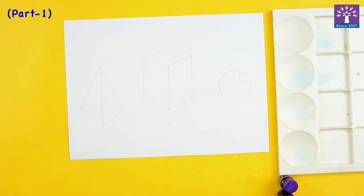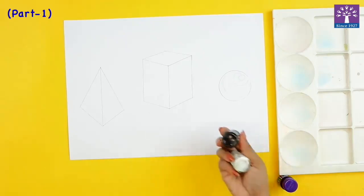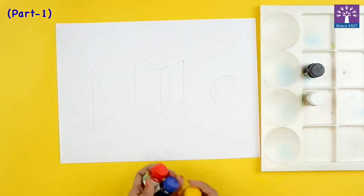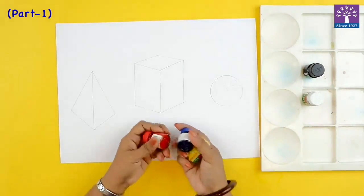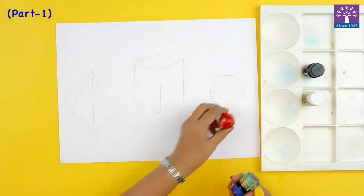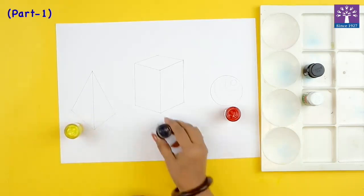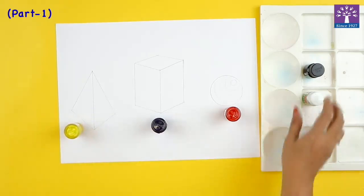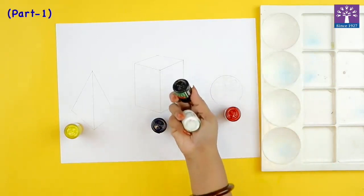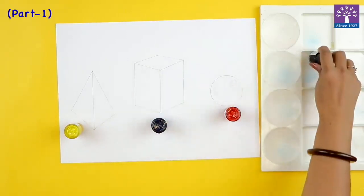So select colors of your choice. Black and white is a compulsory color. So I'm selecting these three colors for these three shapes. Red for the sphere, yellow for the pyramid and blue for my cuboid. And black and white color is there with me to create tint and shade just the way I've explained.